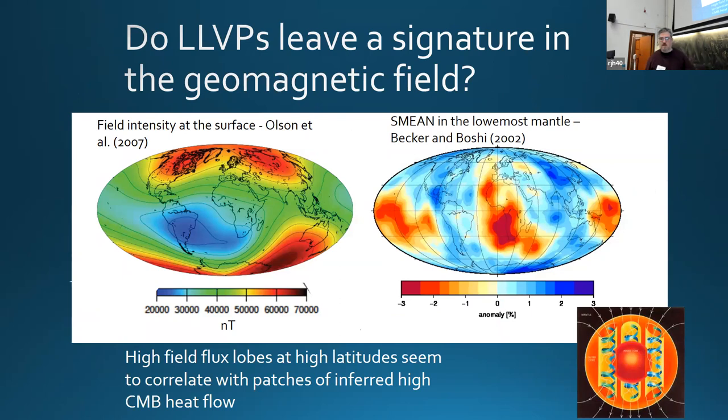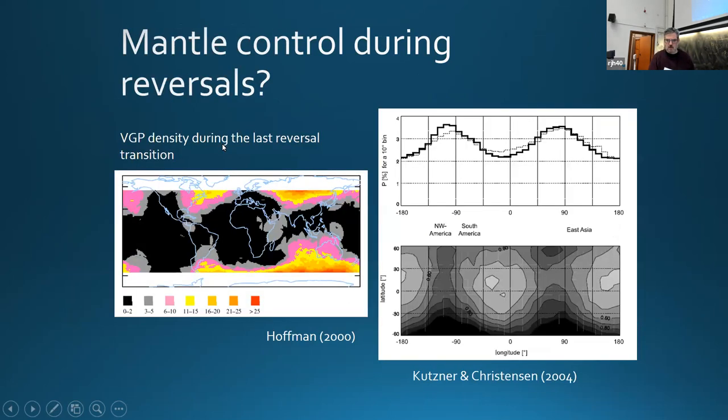This is field intensity at the surface. This is a map of seismic tomography at the base of the mantle. You don't see the LLVPs so much as they're brought out by this color scheme. But what you certainly see is a signature of the slabs, where the LLVPs aren't, the girdle of subduction around them, in these high latitude flux lobes with the field slightly weaker actually at the poles.